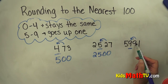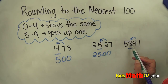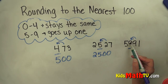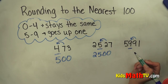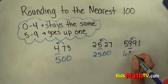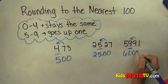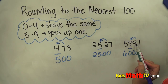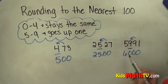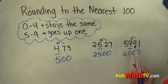It is a nine, so it tells this number to go up one. Well, if that goes up one, it's a ten, so that number actually has to go up one as well. This number rounds to six thousand. Five thousand nine hundred ninety-one is closer to six thousand than it is to five thousand nine hundred.